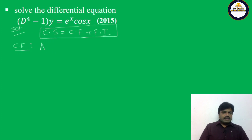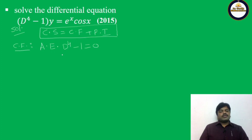It is already in symbolic form in D⁴, so write the Auxiliary Equation. The auxiliary equation: replace y with the coefficient set equal to 0, giving D⁴ - 1 = 0.